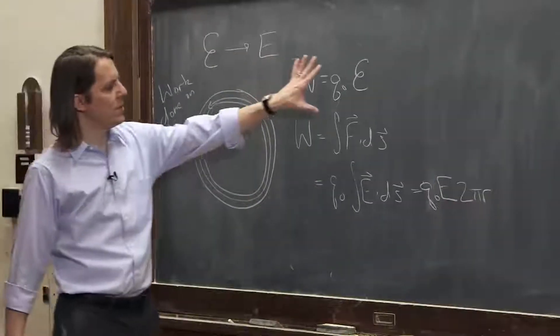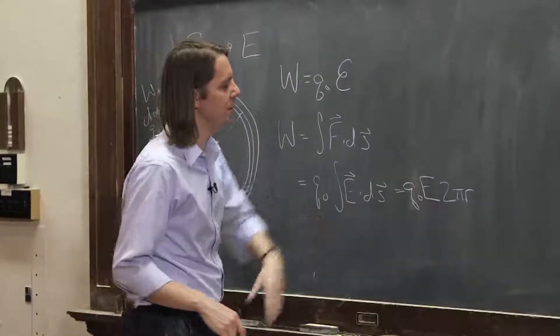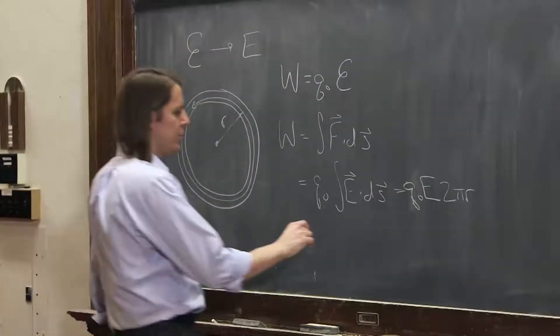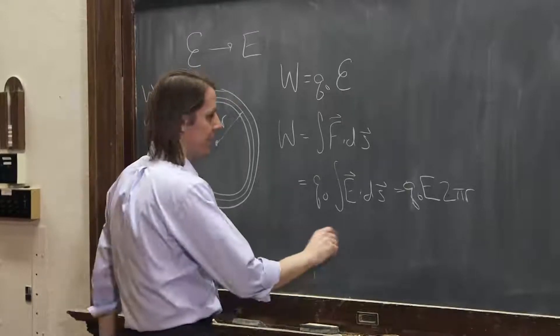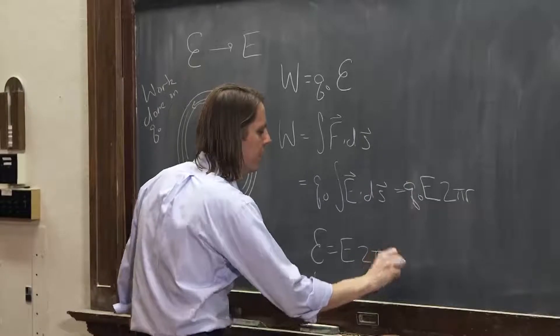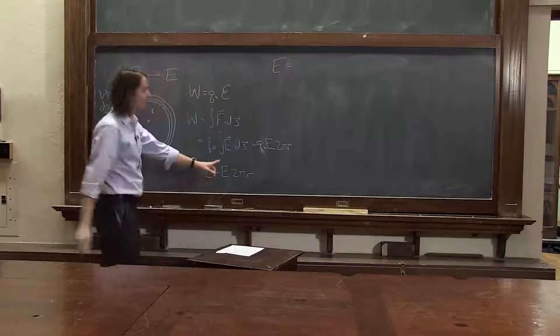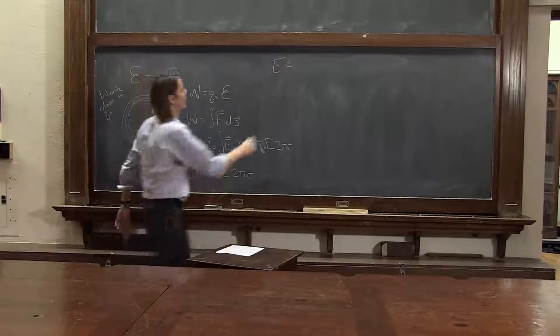So then we could equate these. We could say this Q times the EMF equals Q times E times 2πr. So you could say that EMF equals E times 2πr, but we were trying to find E, right? So we could say that the electric field E equals the EMF over 2πr.